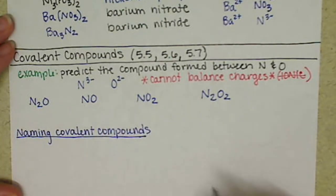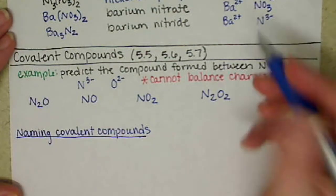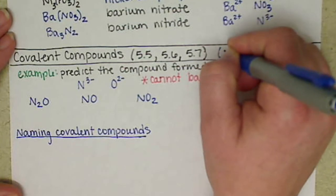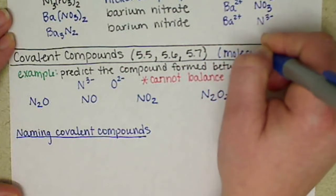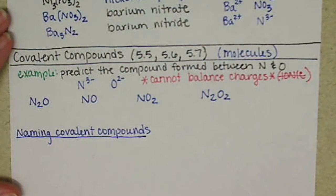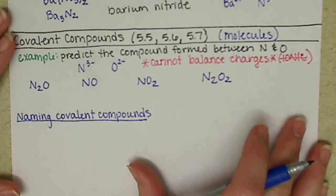Oh, and by the way, ionic compounds we call salts. Covalent compounds we call molecules. Just kind of a side note there.